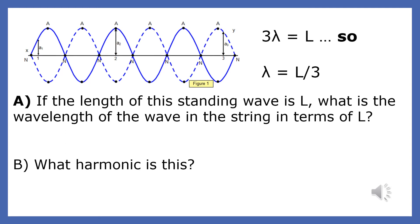If the length of this standing wave is L, what is the wavelength of the wave in the string in terms of L? This standing wave is 3 wavelengths wide, so the wavelength is L over 3.